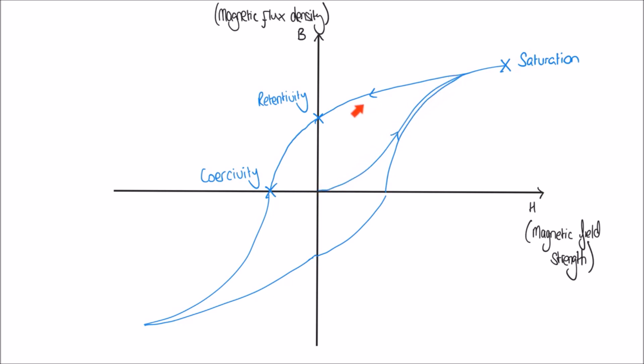From saturation to retentivity, coercivity, saturation in the opposite direction, negative retentivity, another coercivity, and back to saturation again. And this is what we call a hysteresis loop, or sometimes called a BH loop.